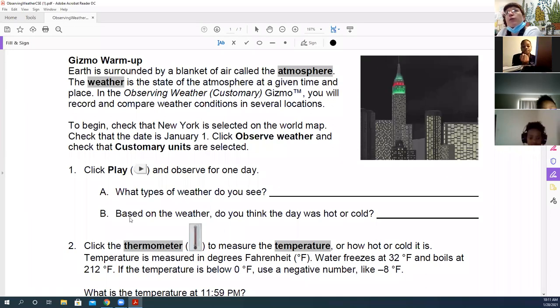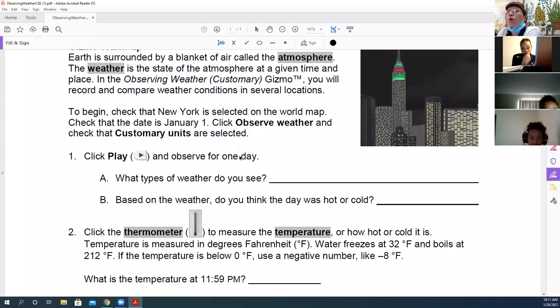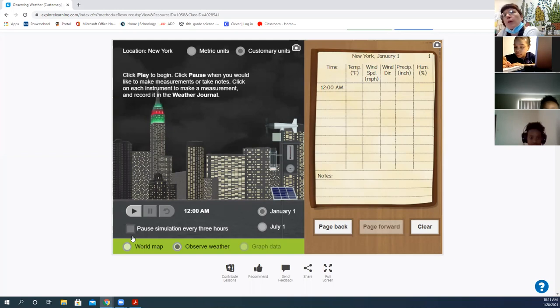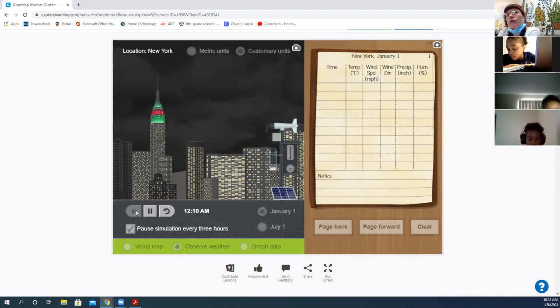Then it says click play and observe for one day. So I'm going to let it run for a full day. I can have it stop every three hours. But remember, it's not just 12 hours. A full day is how many hours? 24. So I'm going to let it run for 24 hours. Okay, so let's make some observations here. I'm going to let it play every three hours just so it's easy to stop the clock. So just pay attention to the weather that we're observing. It will pause and make measurements or take notes every three hours because I clicked this. If I don't have this clicked, I have to manually pause it to take notes. Okay, so here we go.